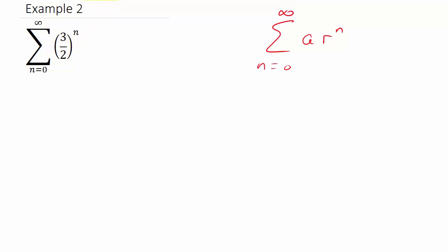And in this case, the absolute value of R is greater than or equal to one, because R is three halves and it's larger than one. So that means this series diverges.